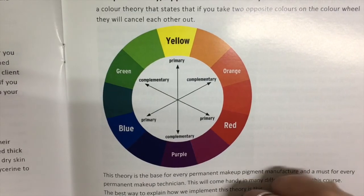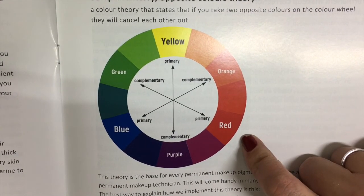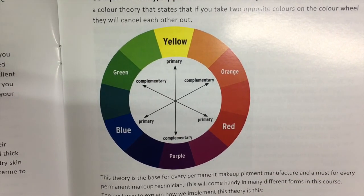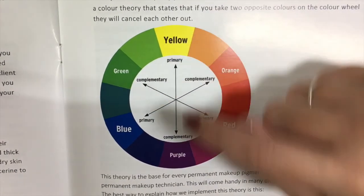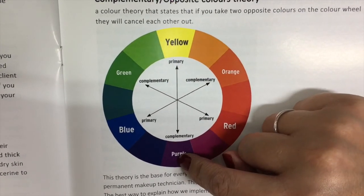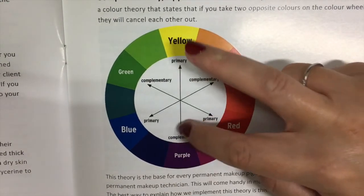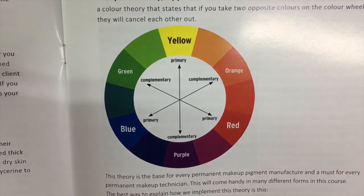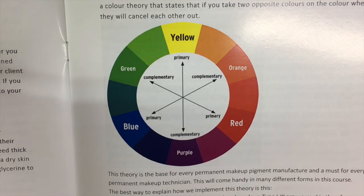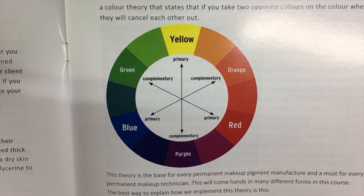I want you all to look at this color wheel — why is it important? There are complementary colors. Whenever we look at the wheel and see an opposite color on it, Newton's color theory says they're going to cancel each other. The way we need to know this in permanent makeup is that in many cases we're going to be working on previously done permanent makeup.